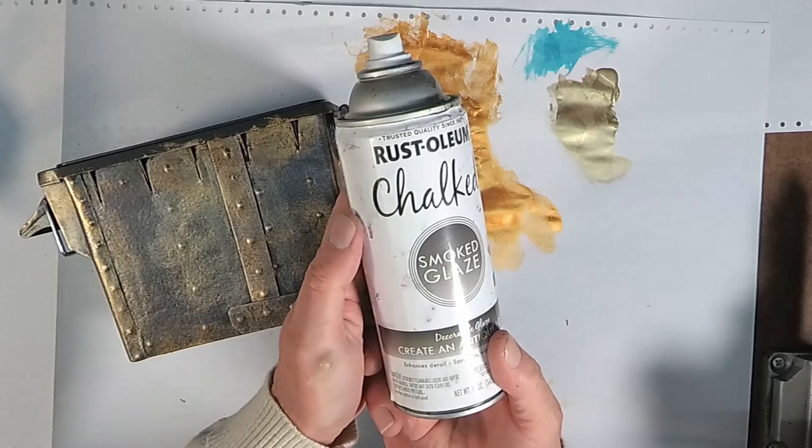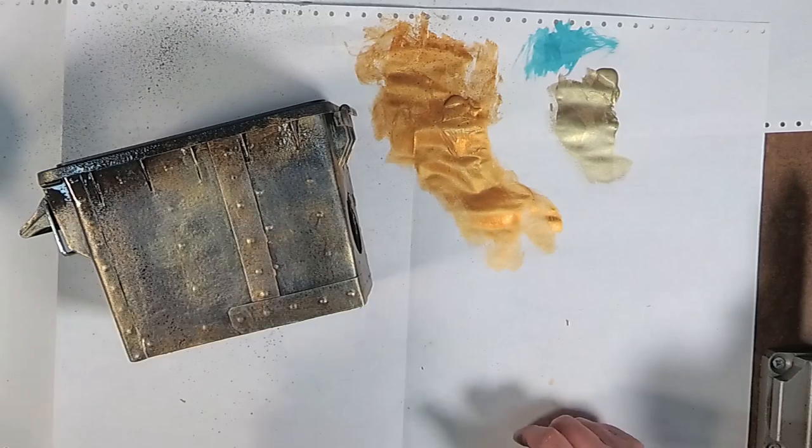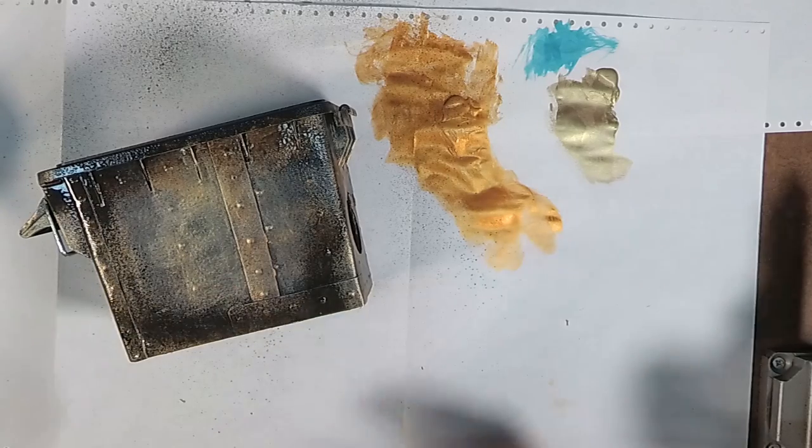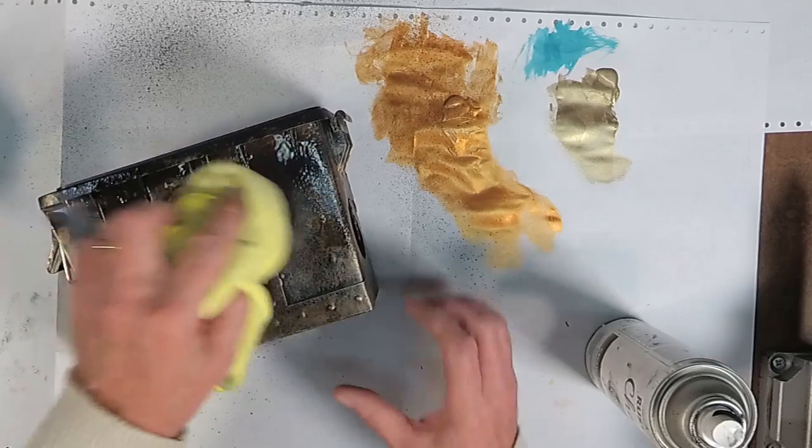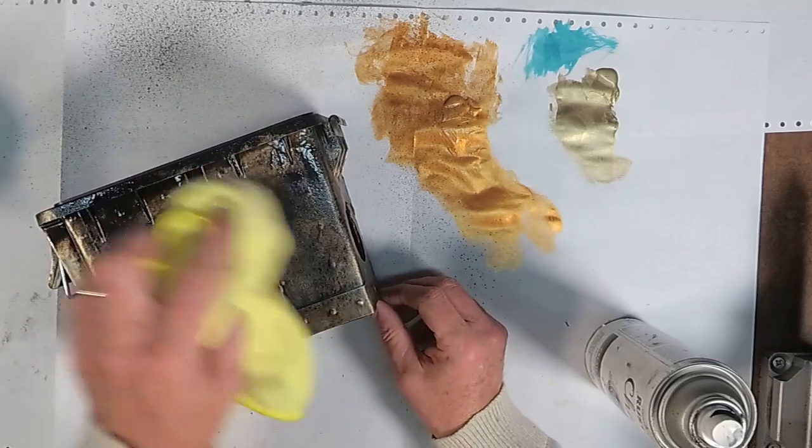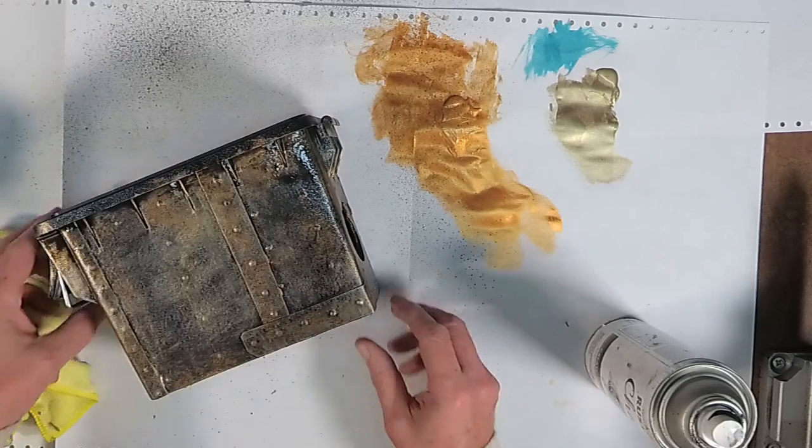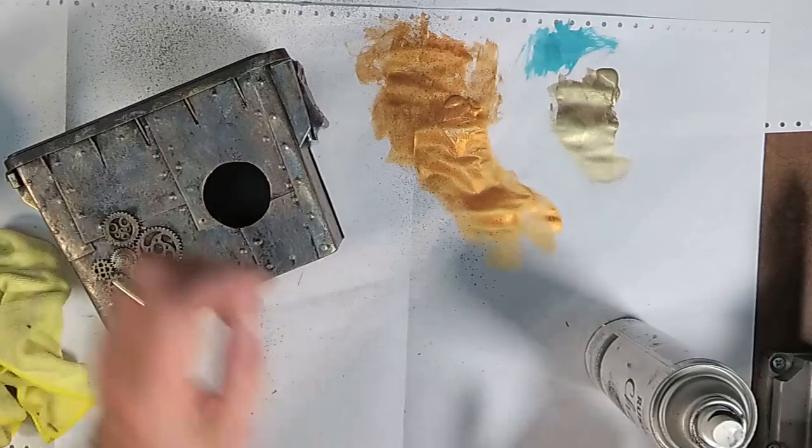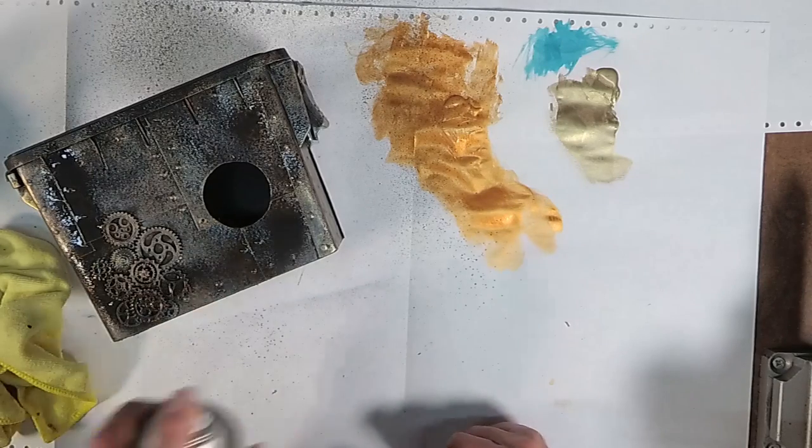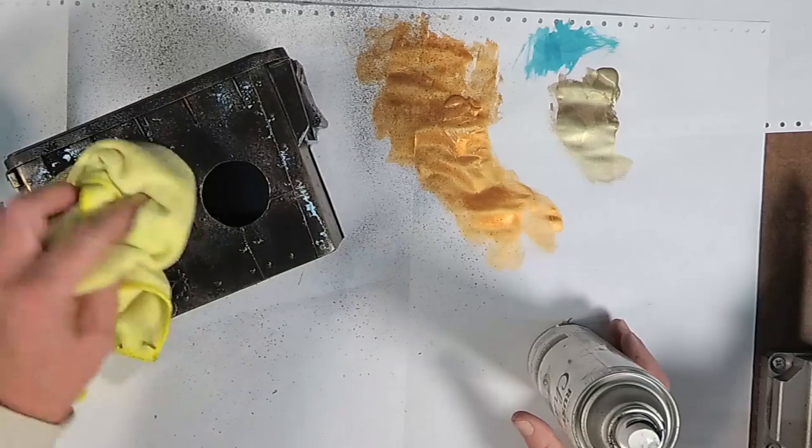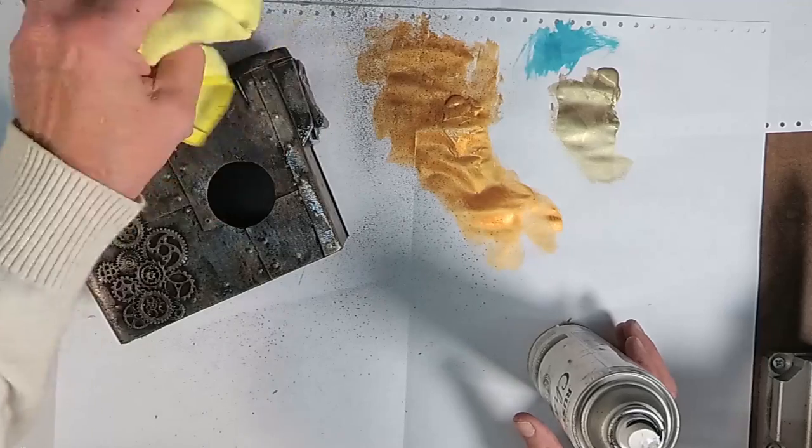Now I'm going to use a smoke glaze from the same Rust-Oleum product line and I'm going to spray this on. This is kind of a transparent color and you can take a rag and just kind of dob it off or smear it off but it starts filling in some of the darker crevices and cracks and I'm starting to really like how that's setting in. Especially on the front side with the gears it fills in a lot of the dark pieces and just as you start to I don't know dob it off I'm really liking how this is looking.